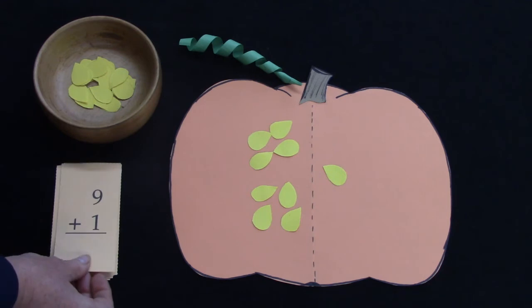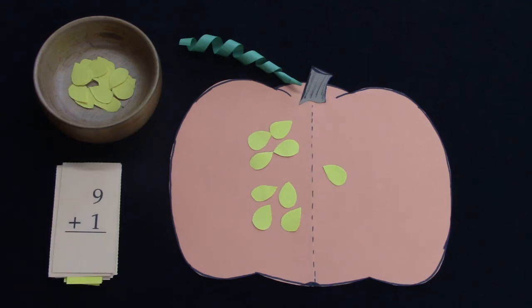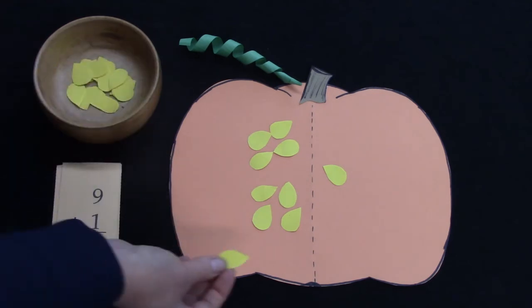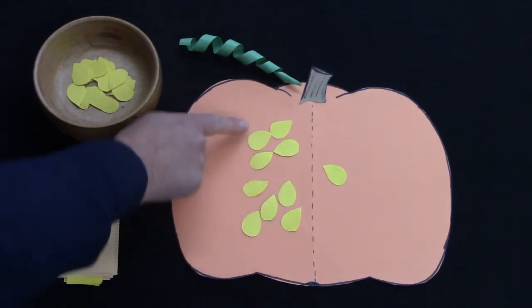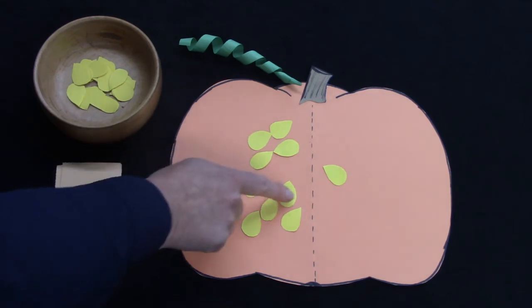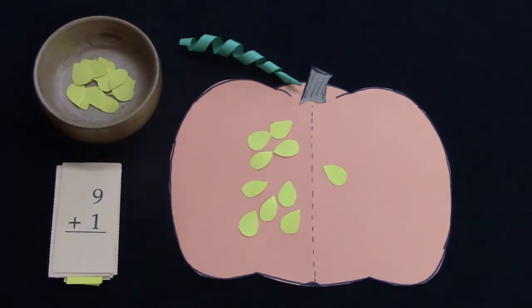And our last card for this set. Nine plus one. Well, I need to add another seed to this side. Four, five, six, seven, eight, nine plus one more. What would be the next number? Ten. Well done.